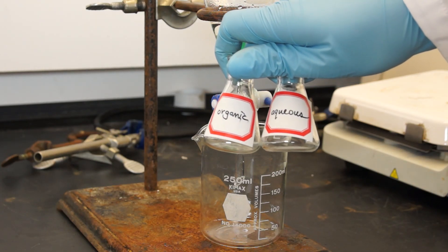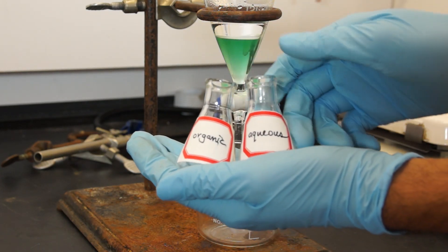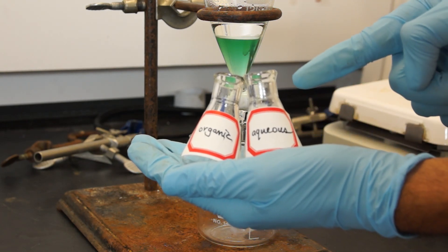Now it's time to collect your layers. Use two Erlenmeyer flasks, one labeled organic and the other labeled aqueous.